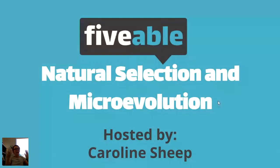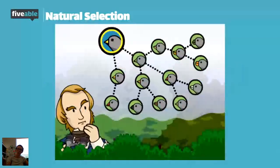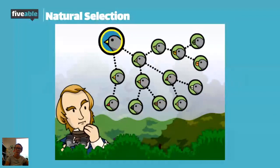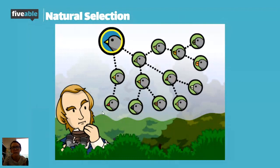We're going to start by talking about natural selection. I have a picture of my favorite person who has lived — Charles Darwin — and his amazing theory of evolution started with his trip to the Galapagos Islands, in which he noticed that the finches on each of the different islands had different beaks. As you can see on these projections, all of these different finches have a different style of beak.